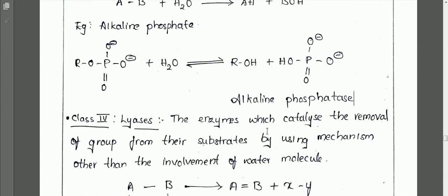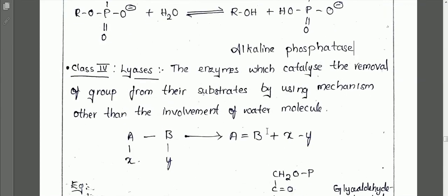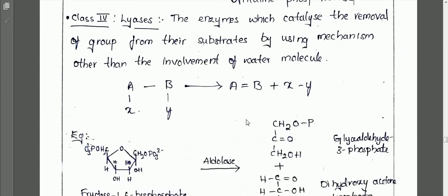The next class is class 4: lyases. Lyases are enzymes which catalyze the removal of a group from their substrate by using a mechanism other than involvement of a water molecule. Here, water molecule involvement is not there, but removal of the group from the substrate takes place.